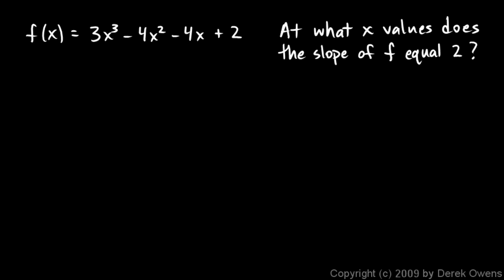And one more example here. f of x is 3x cubed minus 4x squared minus 4x plus 2. And we're told to find at what x values does the slope of f equal 2. Well, we'll start by finding the derivative, f prime of x. And that's quick and easy. This will be 9x squared minus 8x minus 4. The derivative of the constant here is 0.